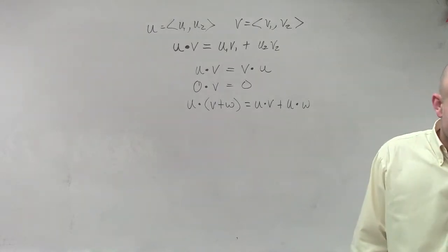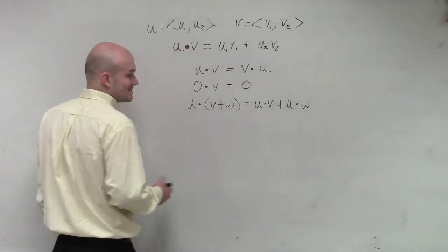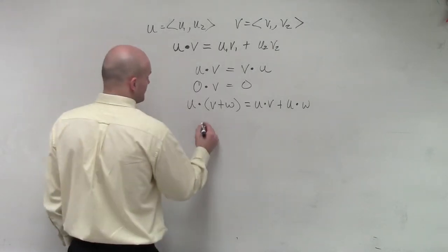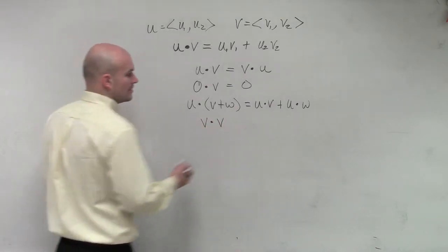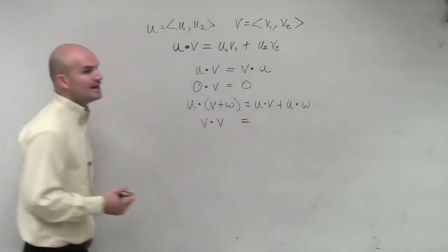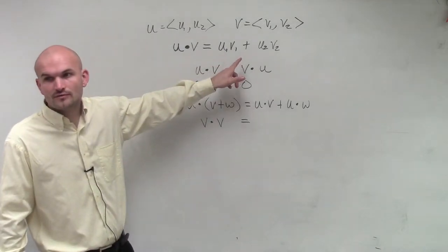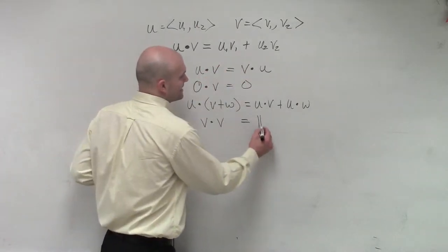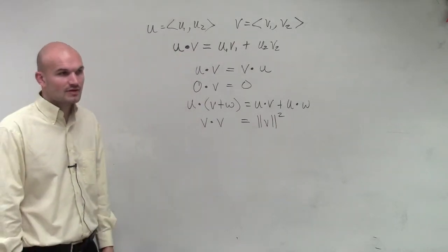Next one is if I take the same vector and multiply by itself. Let's say I did v times v. Kind of think about that. If I did v1 times v2, what that's going to be is the magnitude of v squared, right?